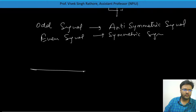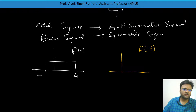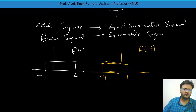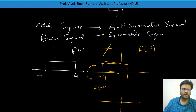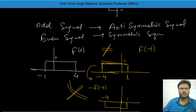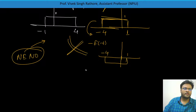Let's see one more example. Some signal ranging from minus 1 to 4 with amplitude 1 — this is F(t). If we plot F of minus t by time reversal, we get the signal shifted. But you cannot say both are equal, so it is not even. And minus F of minus t is also not equal to F(t). So this signal is neither even nor odd.